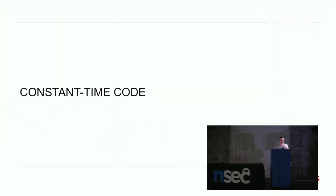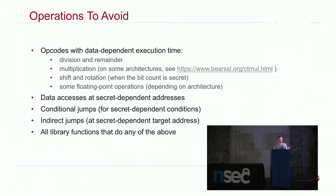Constant-time code is code that will not leak secret information through timing attacks. If execution time is not constant, it should not be correlated to secret data — both directly and in its indirect effects on the machine, in particular cache contents. To write code this way, you must be wary of certain operations. You write in some high-level language — C, Rust, Go, C#, Java, JavaScript, Python, Scala — but it will become assembly code that the CPU runs. You need to know which opcodes result from your code, because some have data-dependent execution time.